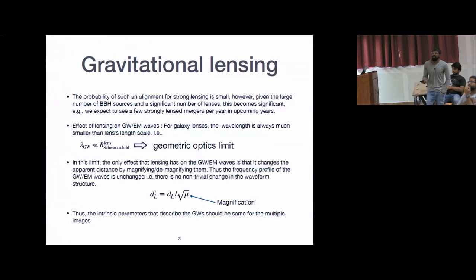Now the question is what is the effect of lensing on gravitational waves or electromagnetic waves? For galaxy lensing, if galaxy is a lens, I am focusing on this case—in this case the wavelength of your gravitational wave or electromagnetic wave is much, much smaller than the lens length scale, and in this case it is Schwarzschild radius, just a representation of the total mass of your galaxy. If you do the calculation, the lambda or wavelength of gravitational or electromagnetic wave is much smaller than that. In this situation we call this the geometric optics limit. In geometric optics limit, there is no non-trivial change in the waveform. I am talking about the effect of lensing on these waves.